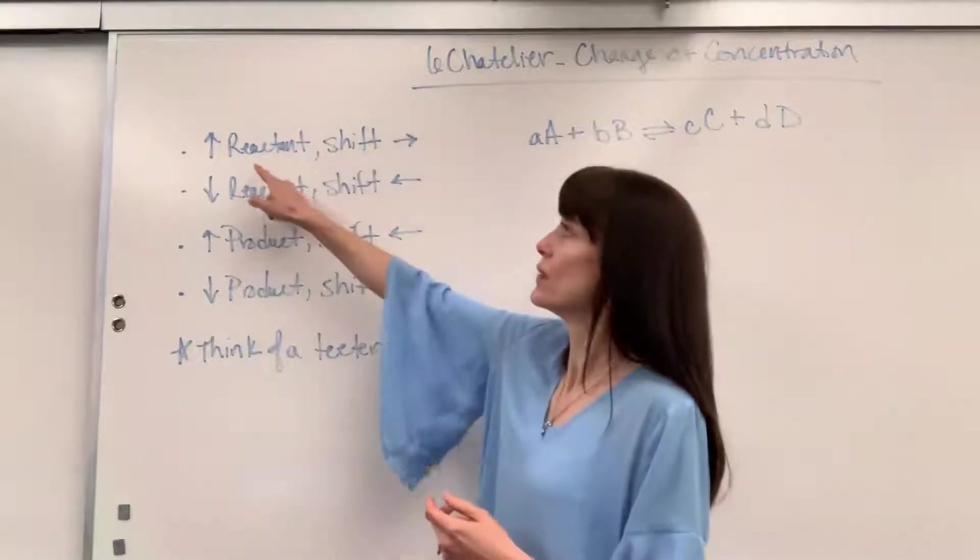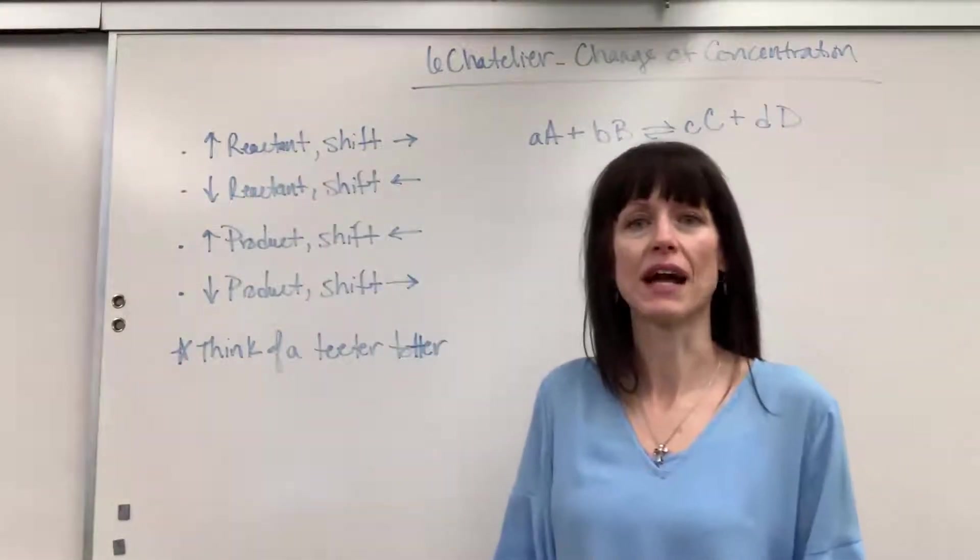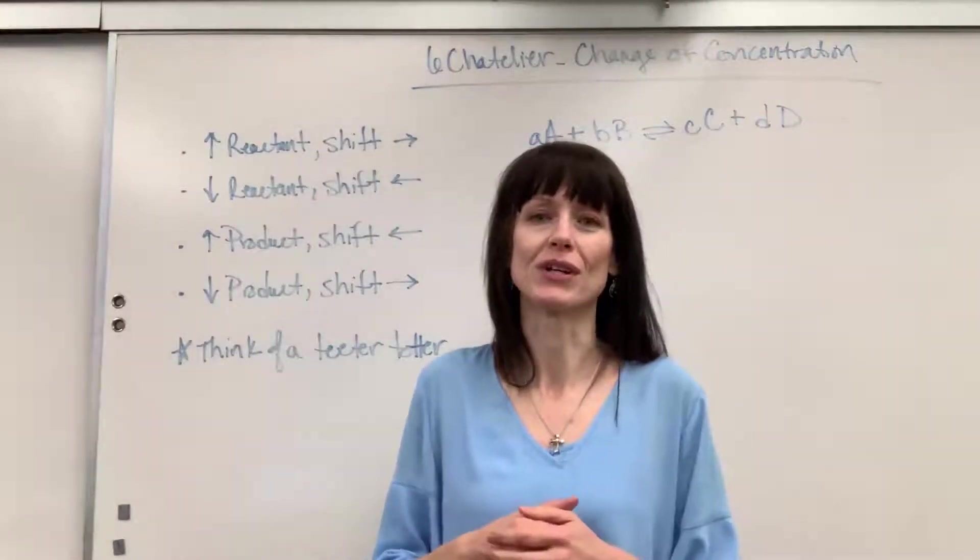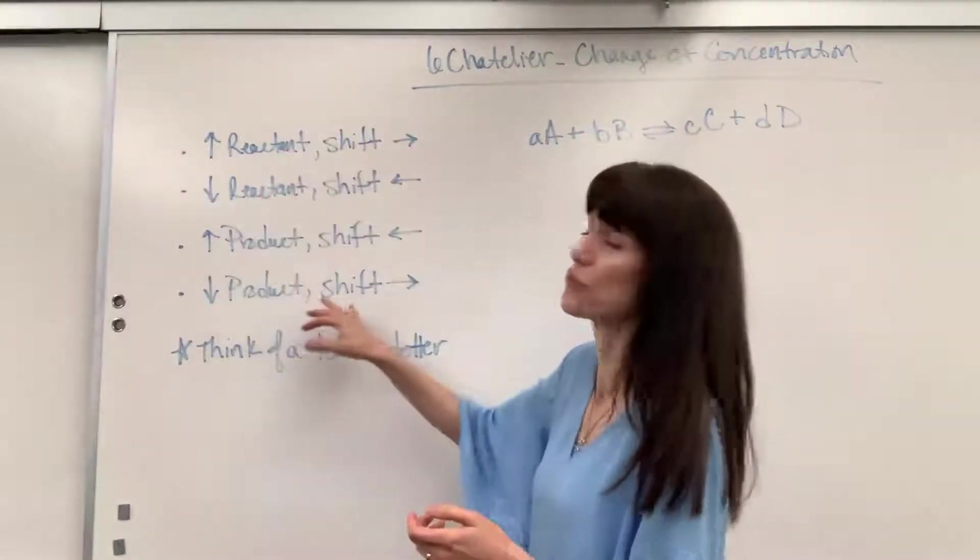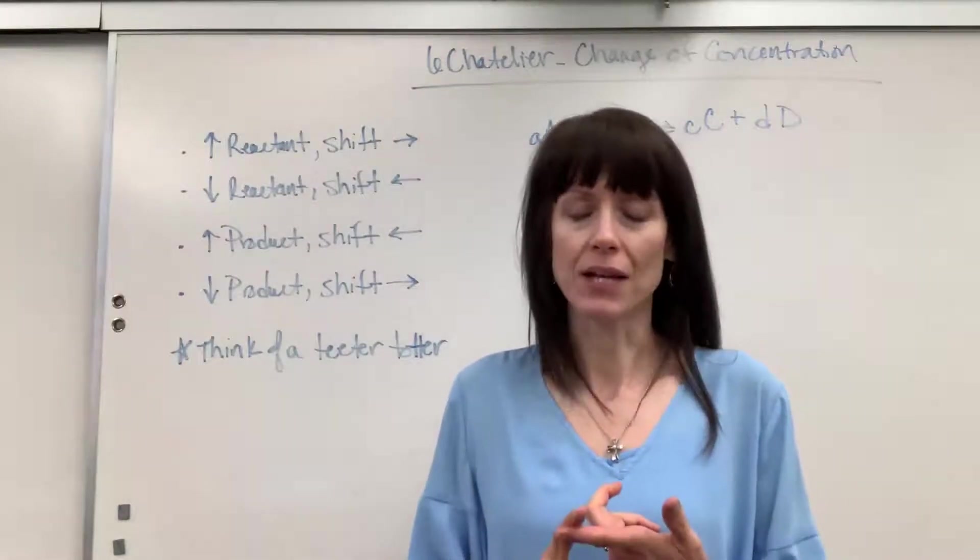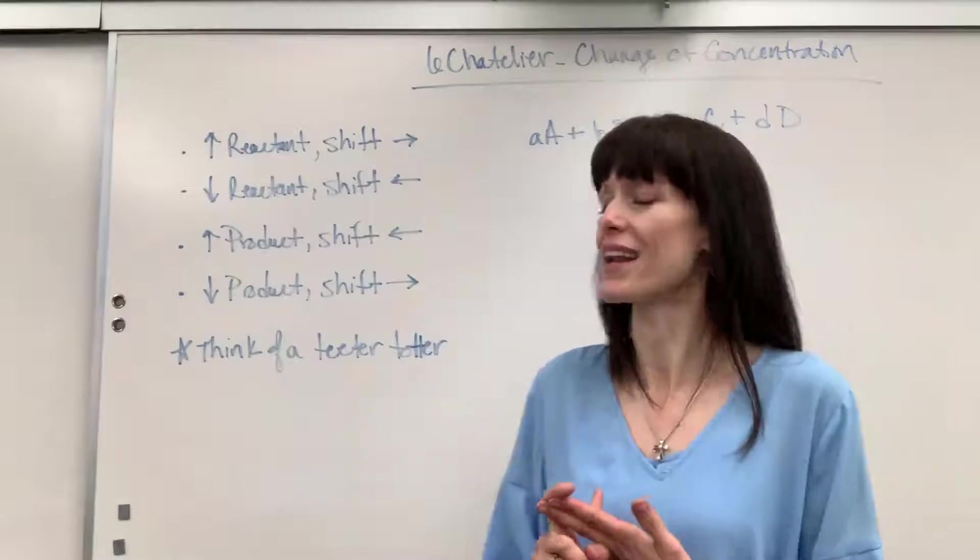For example, if you increase the concentration of the reactants, the reaction is going to shift in the forward direction. It's going to go toward the products. So here's the key, the four things of how we can change concentrations: adding, taking away reactants, adding, taking away products.